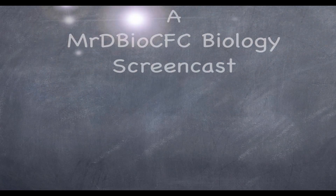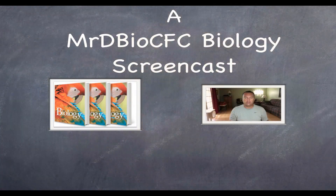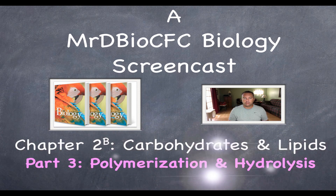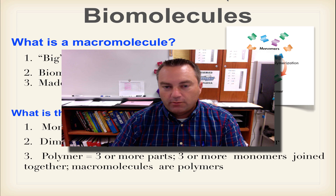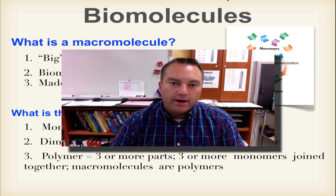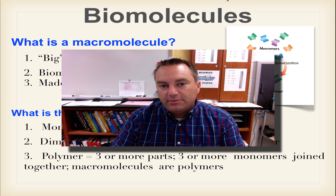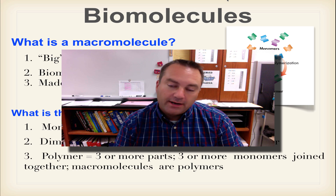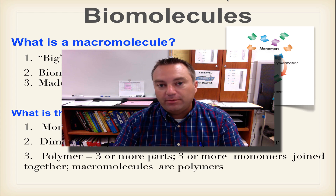Welcome to episode 3 from chapter 2A. In this episode we're going to cover something extremely important: how monomers are put together to make a polymer, and also how a polymer gets broken back into monomers. What we're going to learn about today is a concept called dehydration synthesis and its complementary or opposite chemical reaction called hydrolysis.